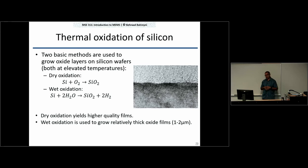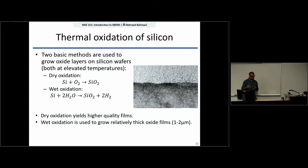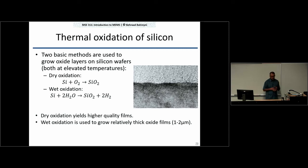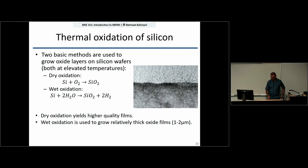Generally, dry oxidation gives a higher-quality film but at a much slower rate. Wet oxidation can be used to grow films as thick as one and a half to two microns if necessary.